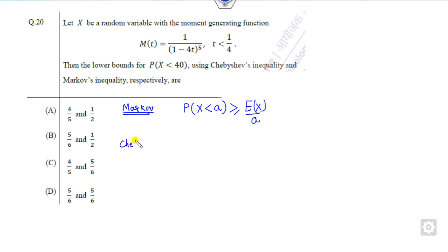While whenever you are talking about the Chebyshev inequality, then you have to write the probability in this form, this is less than k, it will be greater than 1 minus variance of X upon k square.